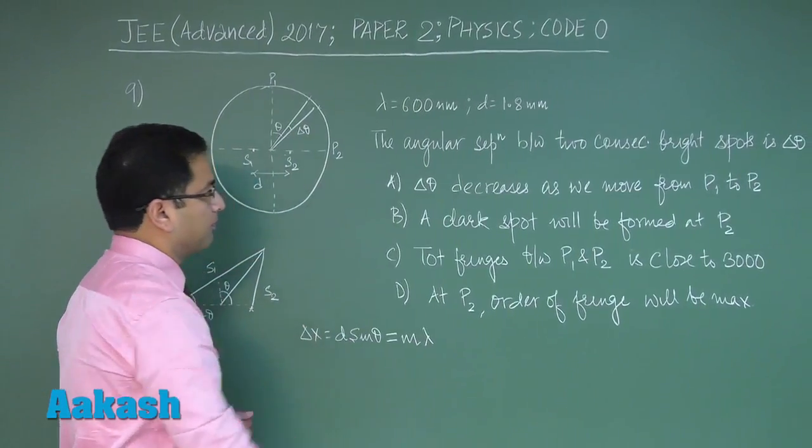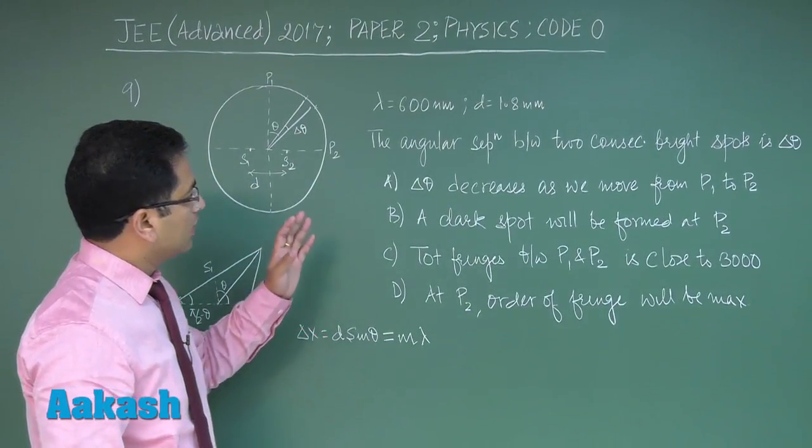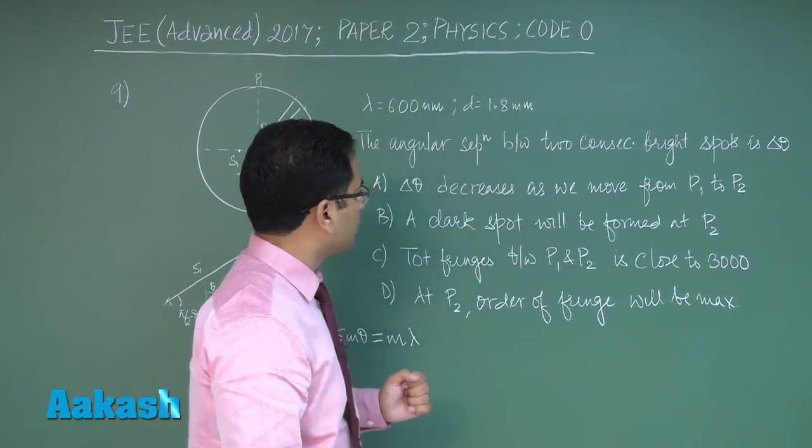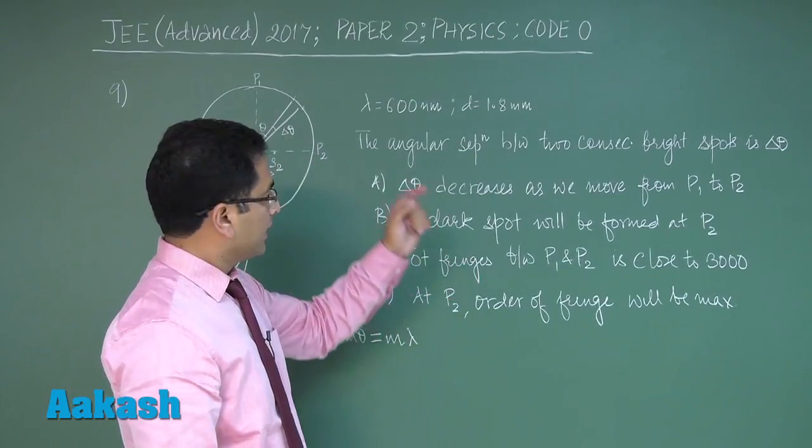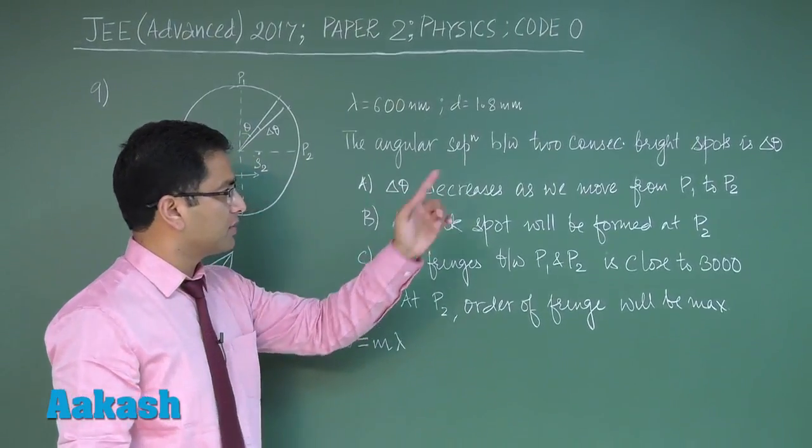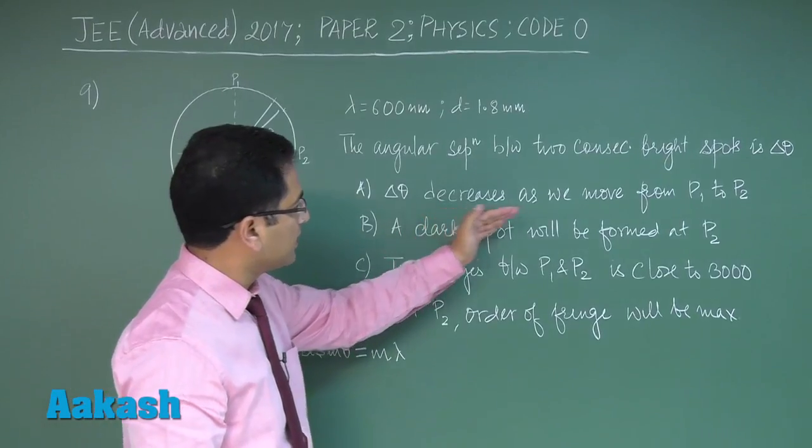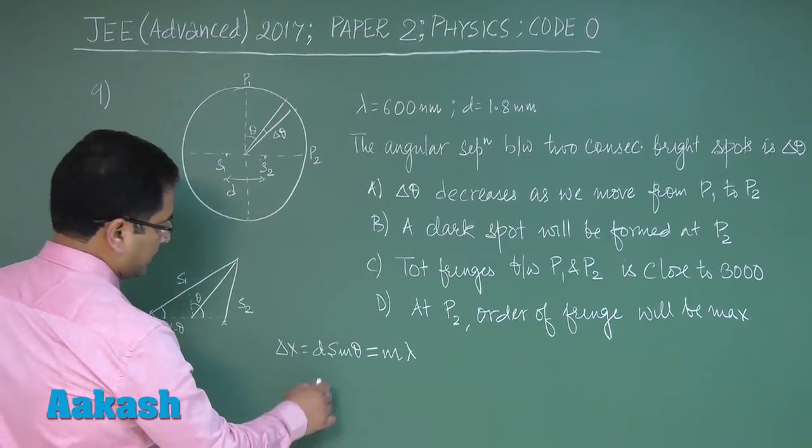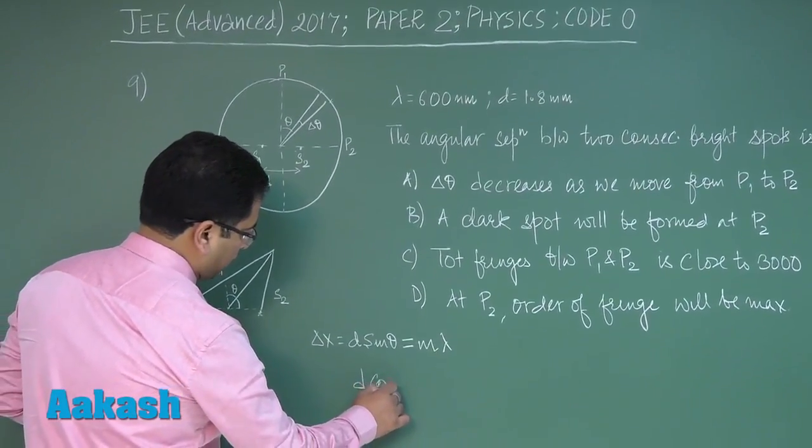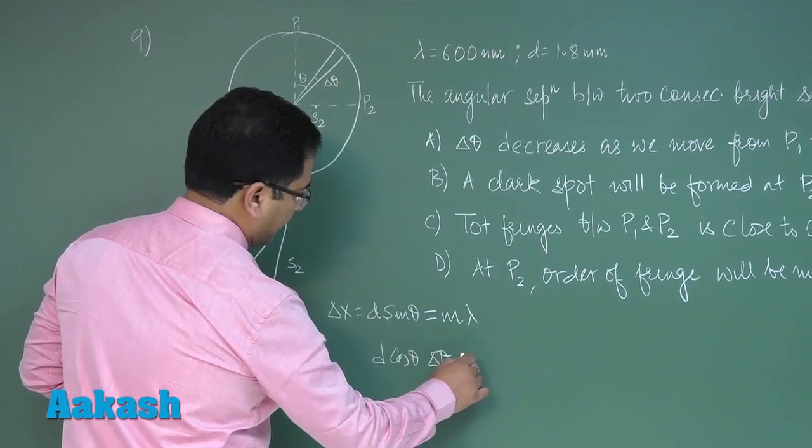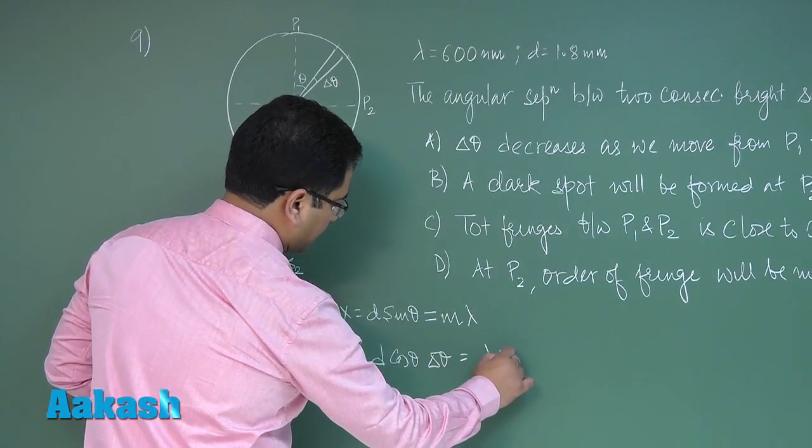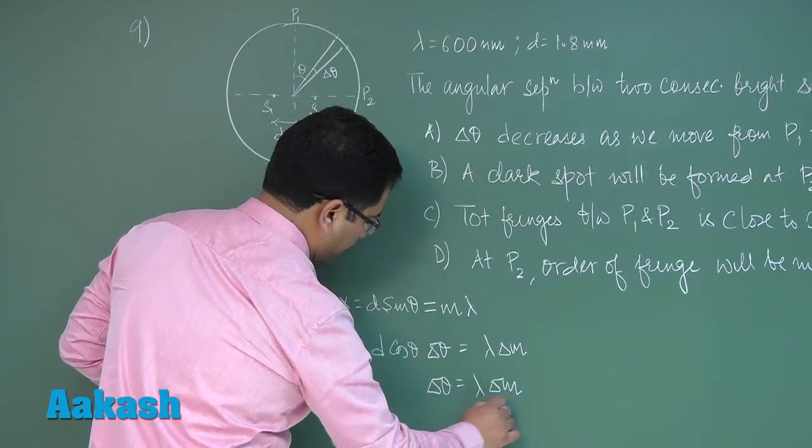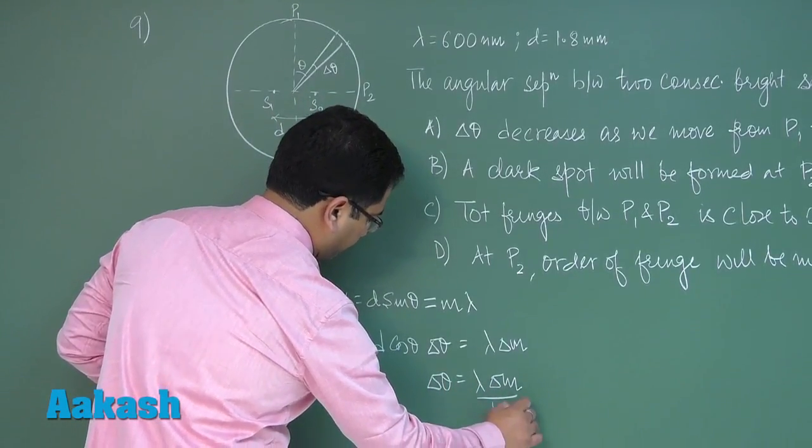Now let's see, the question says the angular separation between the two consecutive bright spots is Delta Theta, and that Delta Theta which is the angular separation between consecutive bright spots decreases as we move from P1 to P2. Let's try to verify that. This d is constant and that will be d cos Theta Delta Theta, and that is Lambda Delta M. Now Delta Theta is Lambda Delta M by d cos Theta.